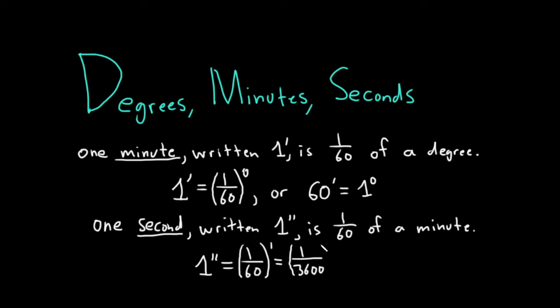This is important because we're going to use this in one of the examples we do. So 1 second is 1/3600th of a degree. That's very, very small. Or you could say that 60 seconds is equal to a minute.